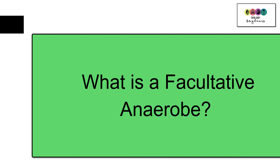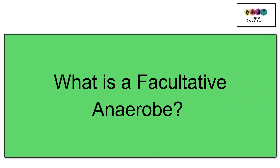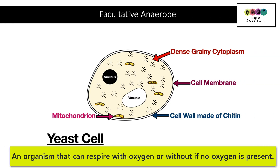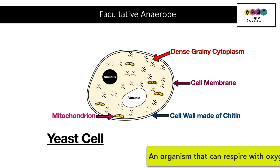What is a facultative anaerobe? It is an organism that can respire both with and without oxygen. We'll take the yeast cell as an example, since it is a facultative anaerobe. If oxygen is present it can respire aerobically, but if there is no oxygen present it can switch to anaerobic respiration or fermentation — and this is the basis of how we produce alcohol in the alcohol industry.